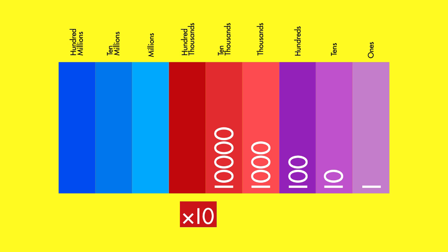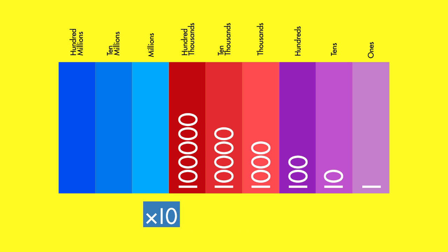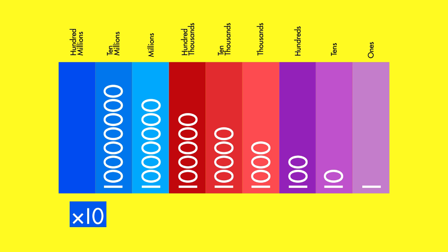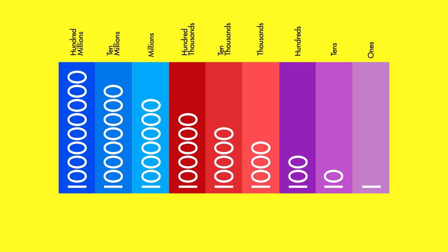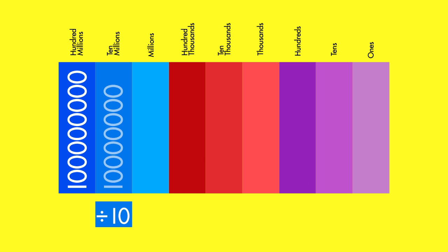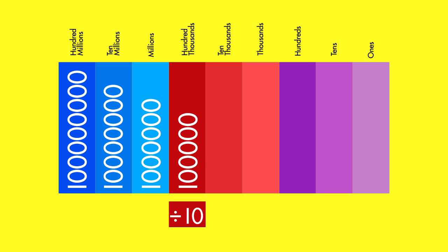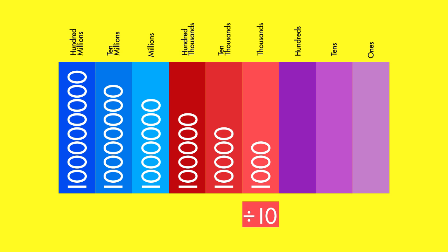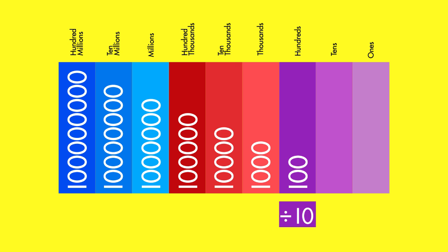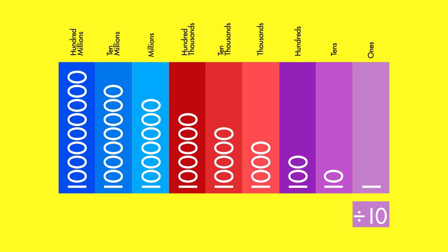Do you see a pattern? Each place contains one more zero than the value of the place to the right. This pattern also works backward. The value of each place is one-tenth the value of the place before. Notice that the value of each place contains one less zero than the value of the place to the left.